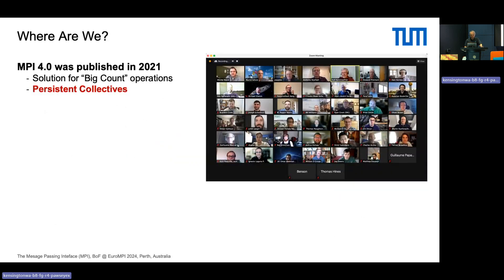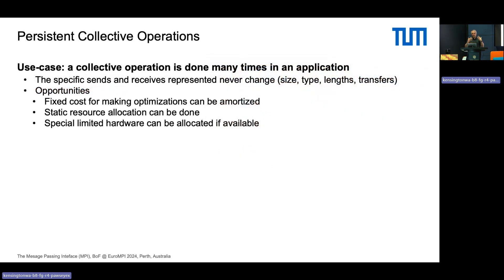Another thing added is persistent collectives. We started with blocking collectives, then MPI 3.0 added non-blocking collectives so you could start a collective, do other work, and wait or test for completion. For point-to-point, we already had persistence — you specify an operation you want to do over and over and reuse it. Now with persistent collectives you can say: this is a collective I want to do repeatedly, here are the parameters — please optimize for that. This is particularly important for collectives because there are potentially very complex algorithms behind them involving spanning trees, communication schedules, and things like this.